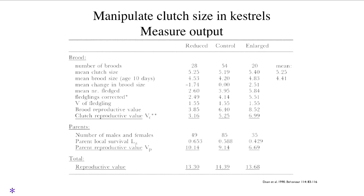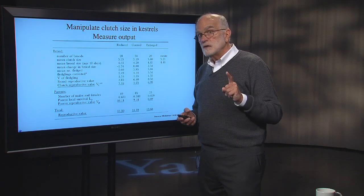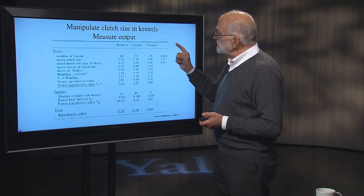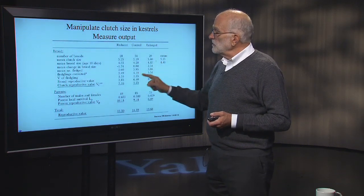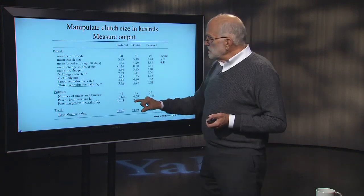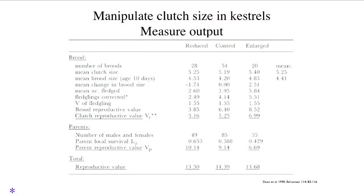Going through the number of babies that flew out of those nests, it looks like birds should have been laying more eggs: reduced clutches produced about three, the control about five, and enlarged nests about seven. Interestingly, the biologists watched how hard the birds were working and used doubly labeled water experiments to determine it was costing them a lot of energy to care for enlarged broods. They were not spending as much time foraging when they had fewer babies. Consequently, local survival of parents was better for small broods — 65% made it through to the next year, versus only 43% for birds with enlarged broods.